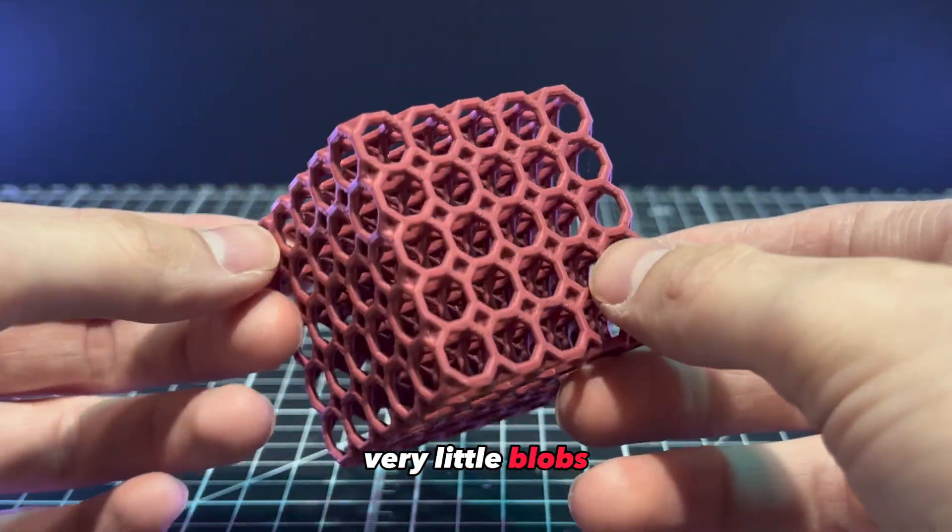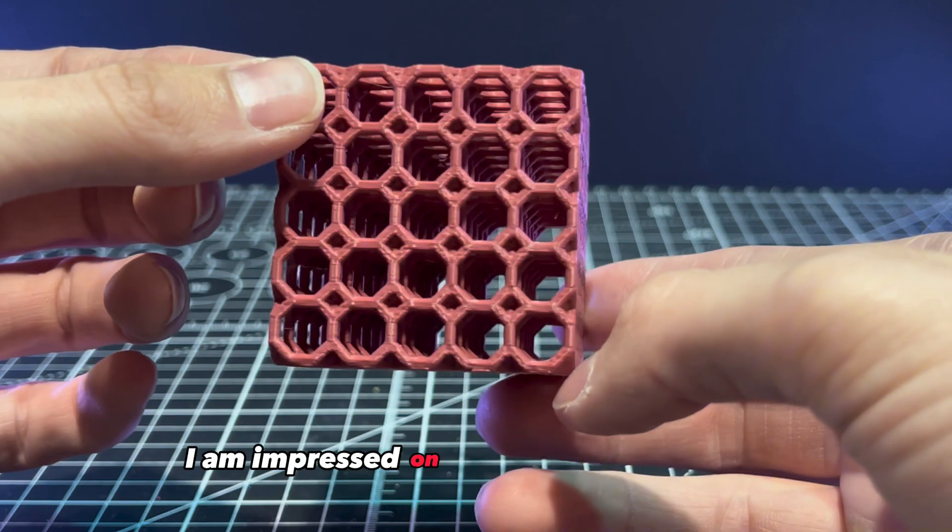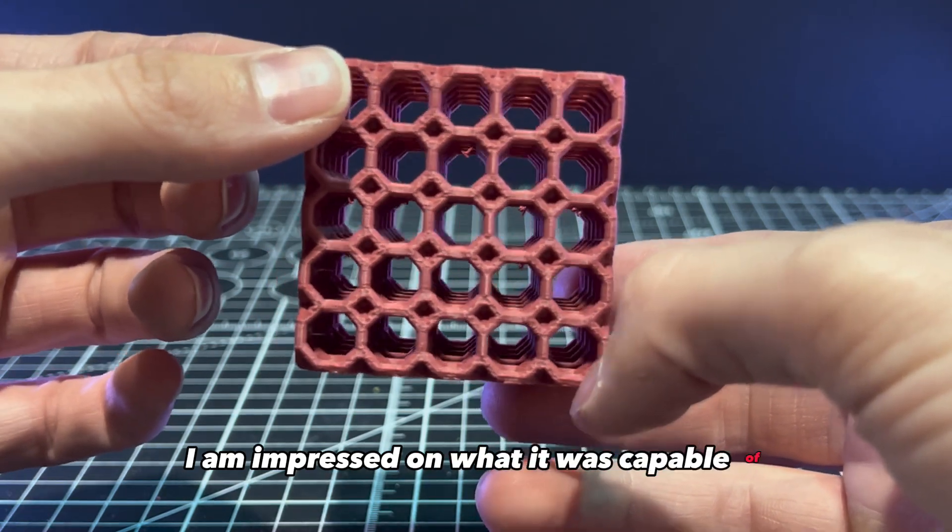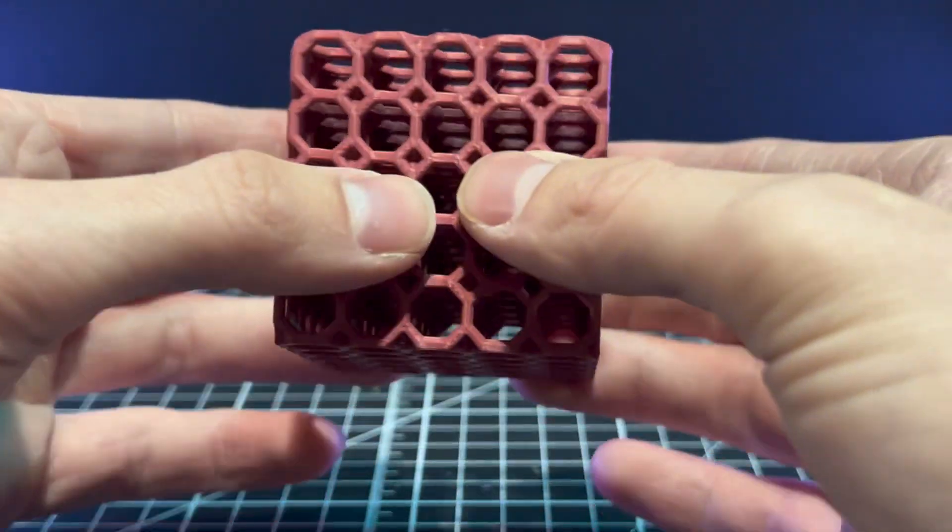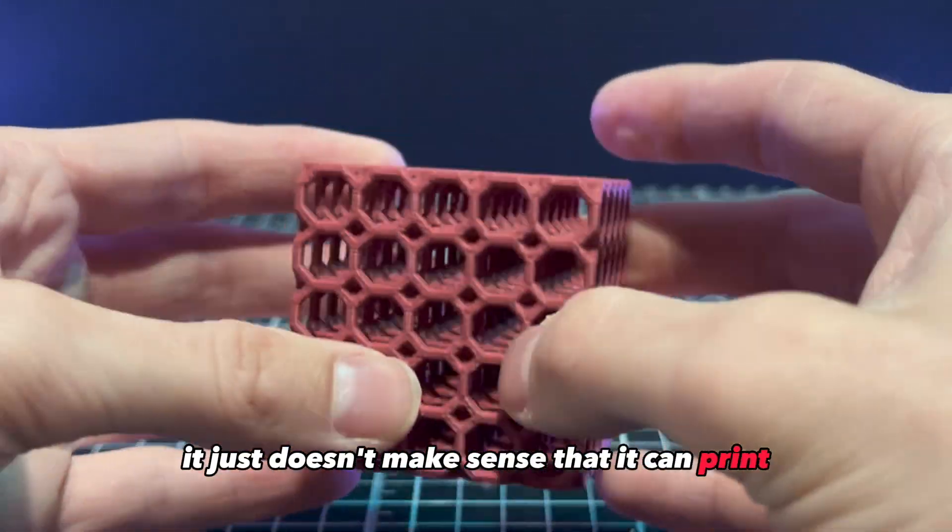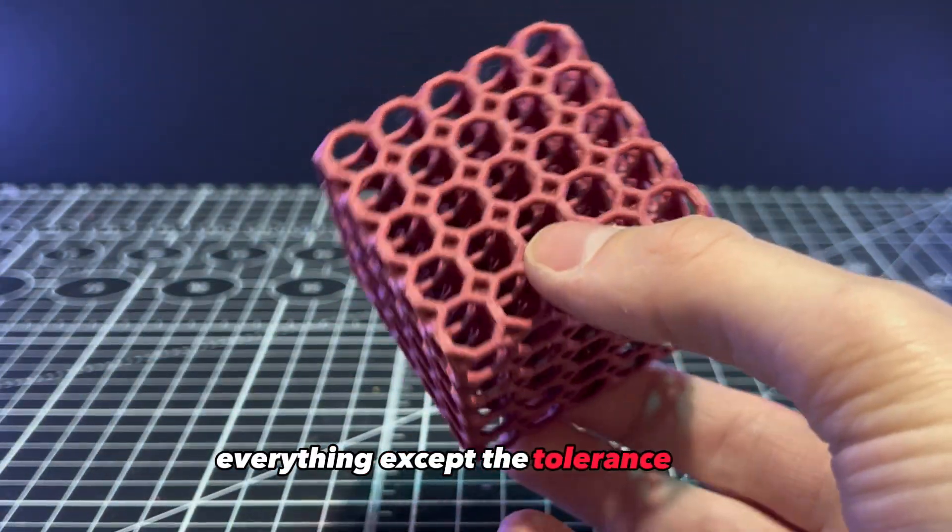After inspecting the cube, I am impressed with what it was capable of for the lattice square. It just doesn't make sense that it can print everything except the tolerance coin.